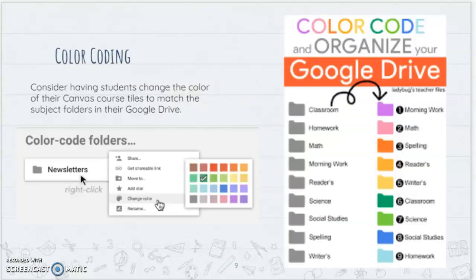If you want to color code, have students right-click their folder, choose 'Change Color,' and pick the color they want. Another thing I've done is have kids match that color in their Canvas course — the Canvas color tile can be changed as well. So if social studies is blue in Google Drive, you can have a blue social studies tile in Canvas too, making things consistent and organized across platforms. Just let me know if you need help with that.